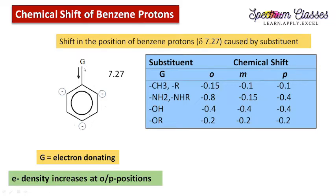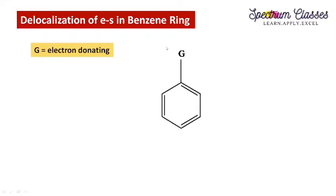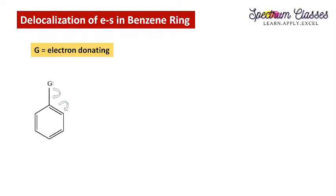Here we have a benzene ring with an electron donating group attached. Electron donating means it is rich in electrons, so it can donate its electrons to the benzene ring, increasing the electron density on the ring. We will discuss how the electron donating group increases electron density. This is the benzene ring to which electron donating group G is attached. Since it is electron donating, it can donate its electrons, forming a new bond here.